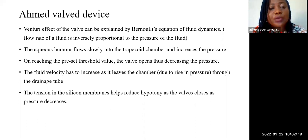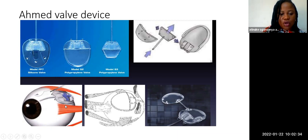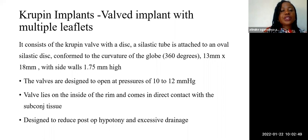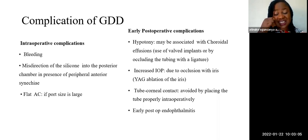The Molteno implant has a wider plate that must be tucked in under the recti muscles. The Ahmed valve has a smaller plate that can be placed between the lateral and superior recti muscles. Complications of glaucoma drainage devices intra-operatively include bleeding, misdirection of the silicone tube into the posterior chamber in the presence of peripheral anterior synechiae, and flat anterior chamber if the outflow is large.